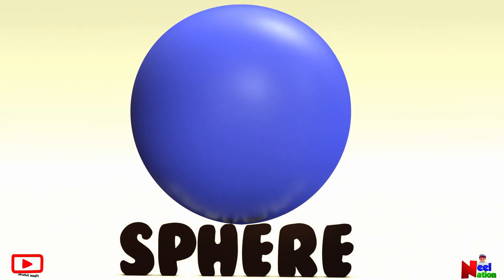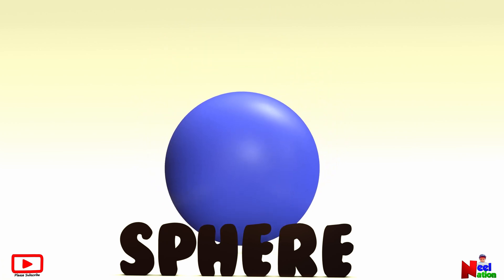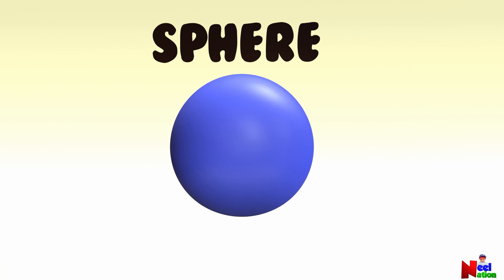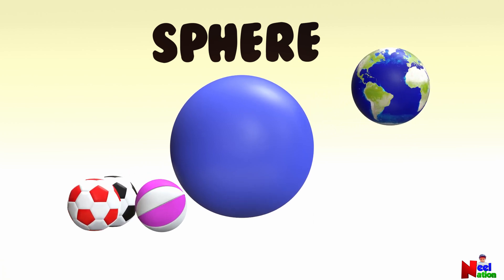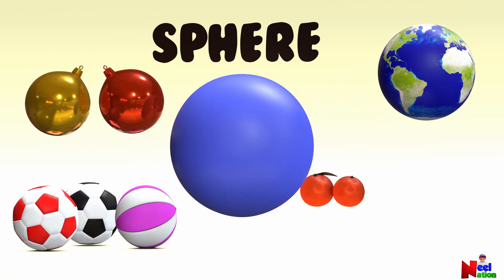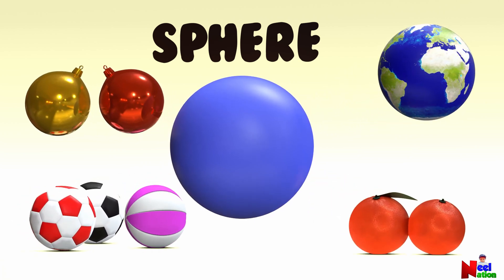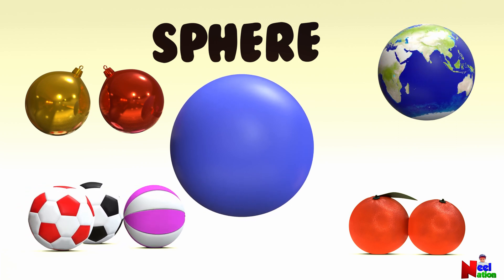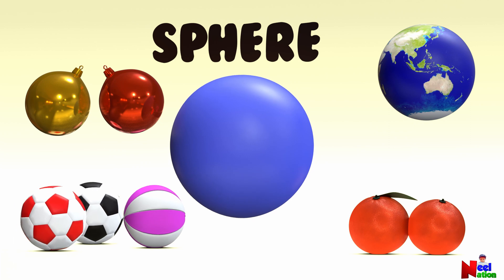This shape is called a sphere. A sphere is a round object which has no vertices and sides — it looks like a ball. Can you name some objects that are spheres? Balls, the Earth, oranges, soccer balls, Christmas baubles, and oranges are all spheres.